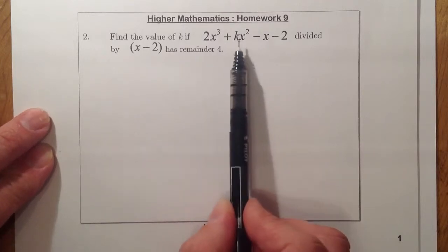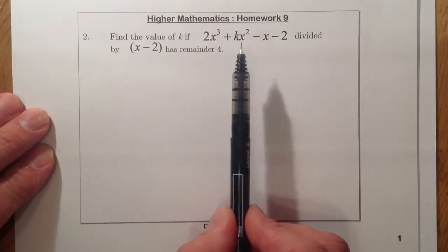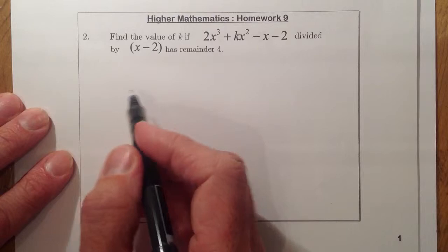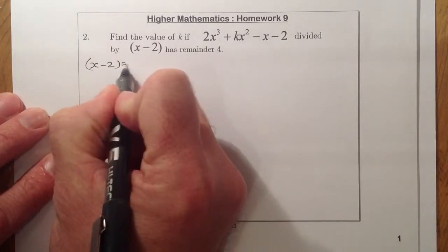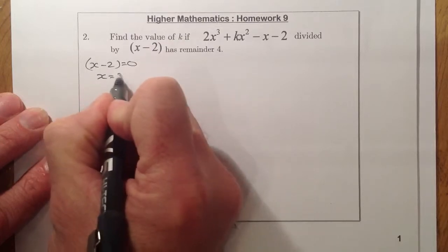Okay, so let's work that out and we'll work out what the k value is going to be here. First thing I'm going to do is work out the root that I'm going to divide by. So just make that equal to zero, so I've got x is equal to two.